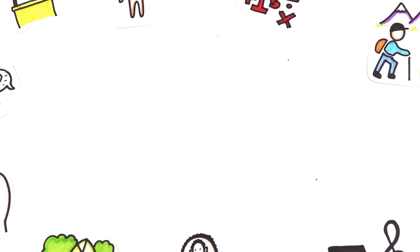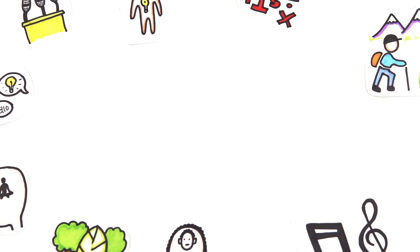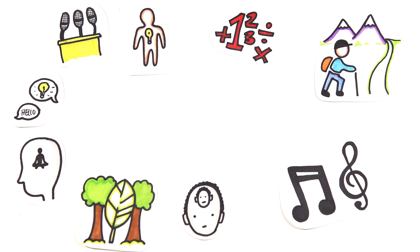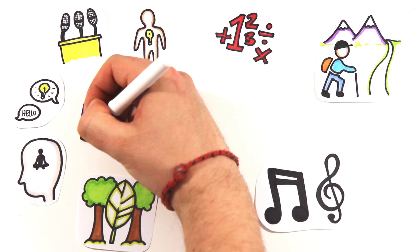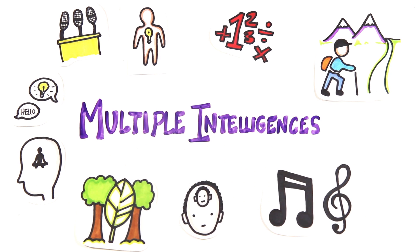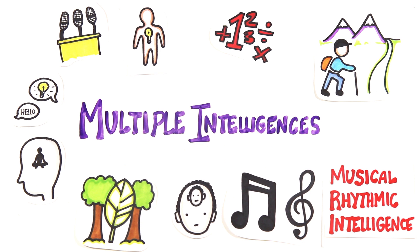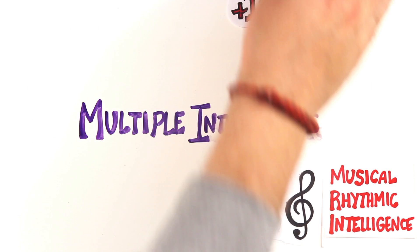Though IQ tests are common, other ways to test if you're smart do exist. There's now a prominent theory of multiple intelligences, such as musical rhythmic intelligence.